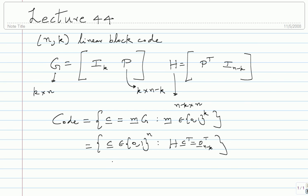The generator matrix can be used for encoding — you can see that very easily. What do you think the parity check matrix can be used for? For a process called error detection. Suppose you have an N-bit vector and you want to find out if it is a codeword or not. You multiply H times C-transpose and see if it evaluates to zero. It is good to think of it in terms of the parity check matrix.